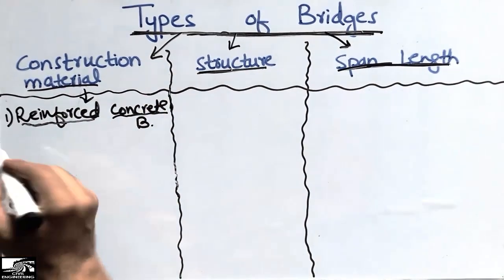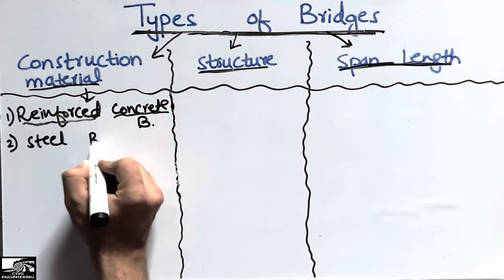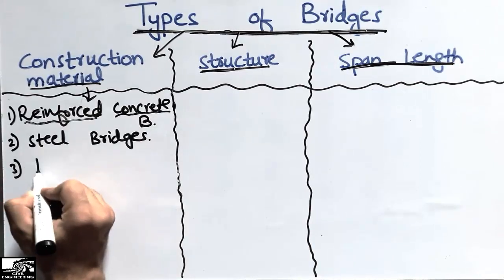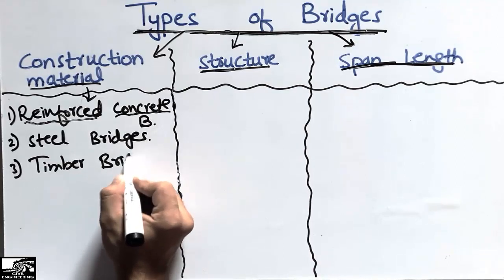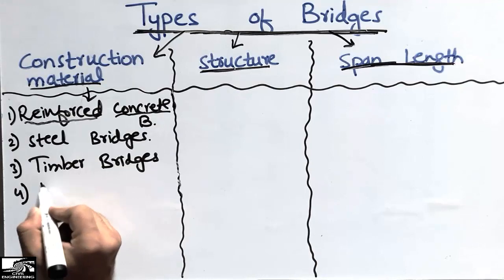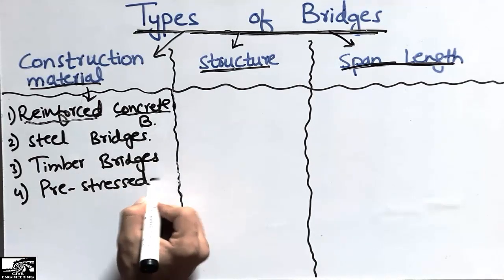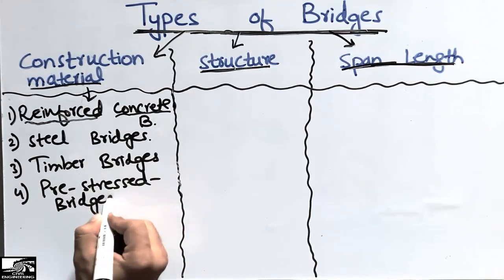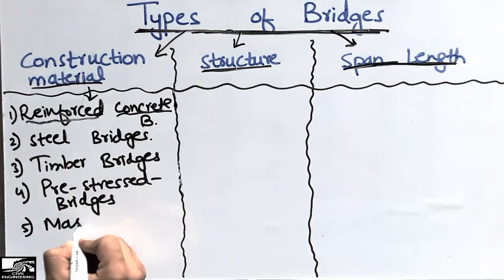The second one is steel bridges. Steel bridges are those bridges which are made up of pure steel. The third one is timber bridges — bridges which are made up of wood. The fourth one is pre-stressed concrete bridges.